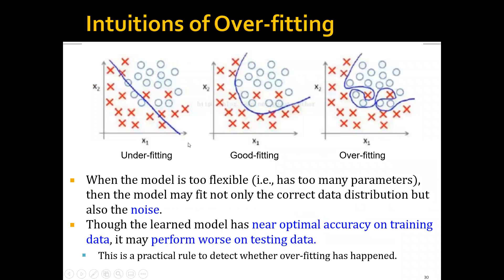For example, let's say that we have a lot of data points, and the crosses here are the positive data points, and the circles here are the negative data points. We want to find a decision boundary that can split the positive and negative data points. When we have little flexibility on the decision boundary, we can see that it actually does a pretty poor job. But if we have more flexibility on the decision boundary, we can see that it starts to fit the data pretty well, and it ignores these two noisy data points, which is good.